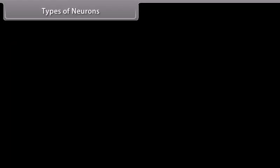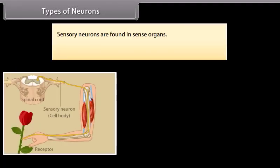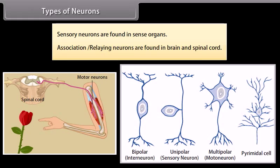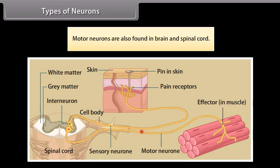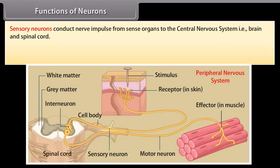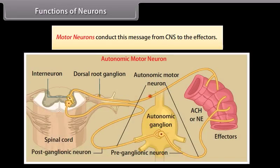On the basis of their functions, neurons are of three types: sensory neurons, association/relaying neurons, and motor neurons. Sensory neurons are found in sense organs; relaying neurons are found in the brain and spinal cord; motor neurons are also found in the brain and spinal cord. Sensory neurons conduct nerve impulses from sense organs to the CNS. Relaying neurons receive these stimuli, analyze and interpret them, and produce a message. Motor neurons then conduct this message from the CNS to the effectors.